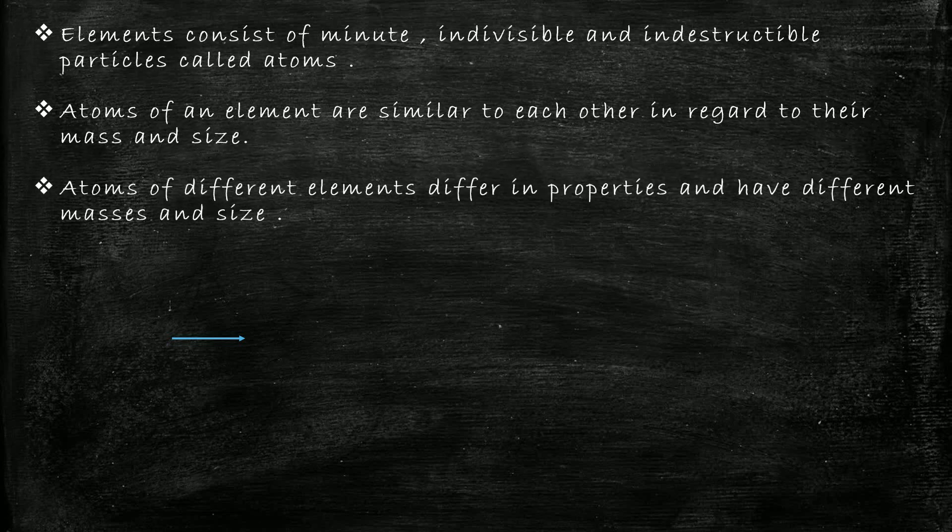The third point states that atoms of different elements differ in properties and have different masses and sizes. This means that if you consider an atom of sodium and an atom of fluorine, they differ in their properties, they have different masses, and the size is also different.